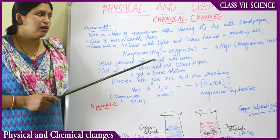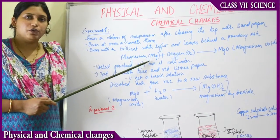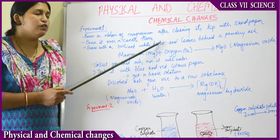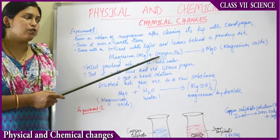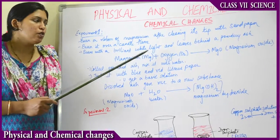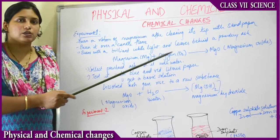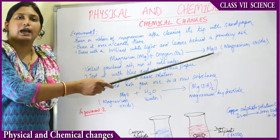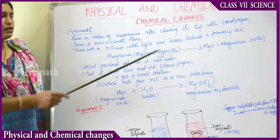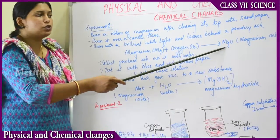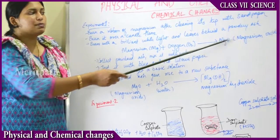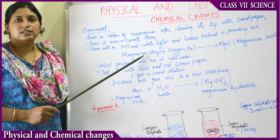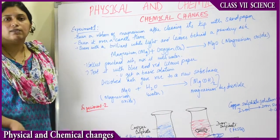The reaction can be termed as: the ribbon of magnesium, Mg, is burnt along with the candle flame. The candle flame burns in the presence of oxygen. So magnesium plus oxygen burns to give rise to magnesium oxide, the powdery ash-like structure. Mg + O₂ has given rise to MgO, that is magnesium oxide. This is the chemical reaction of this experiment.